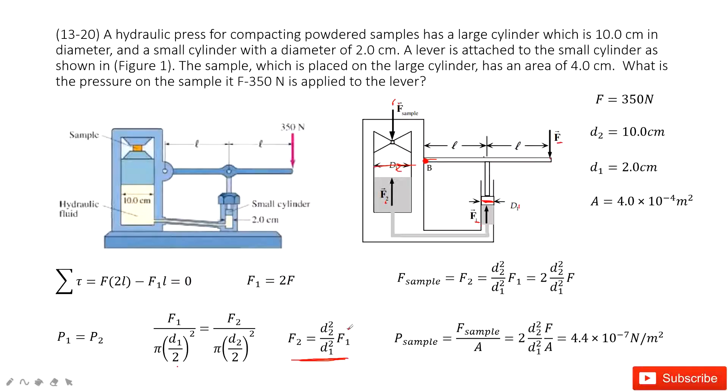And in this equation, we find F2 equal to this constant times F1. And F1 equals 2 times F.